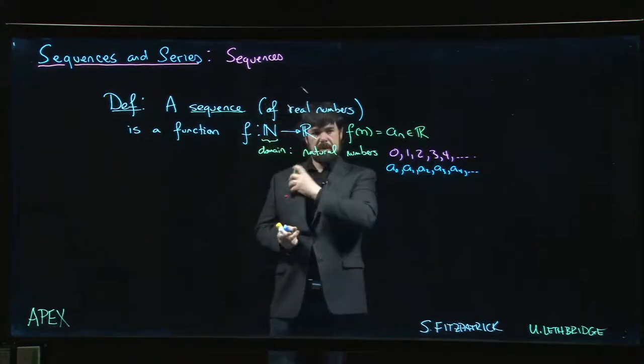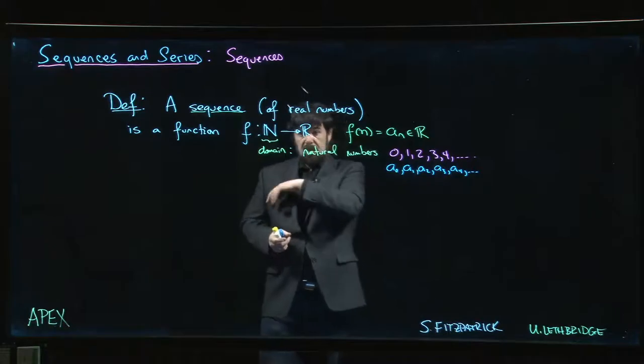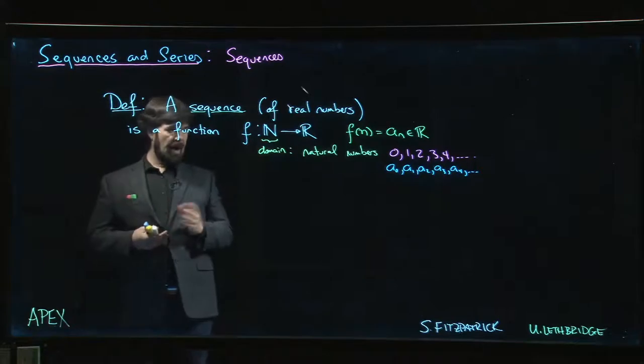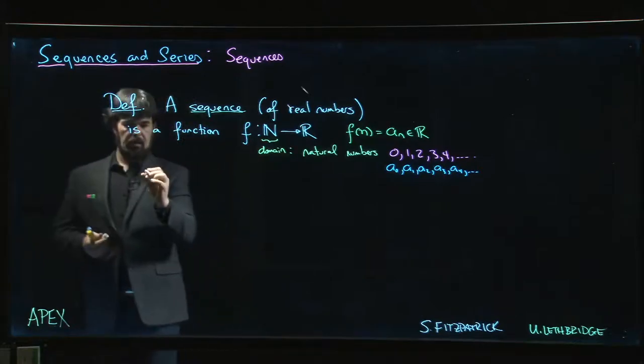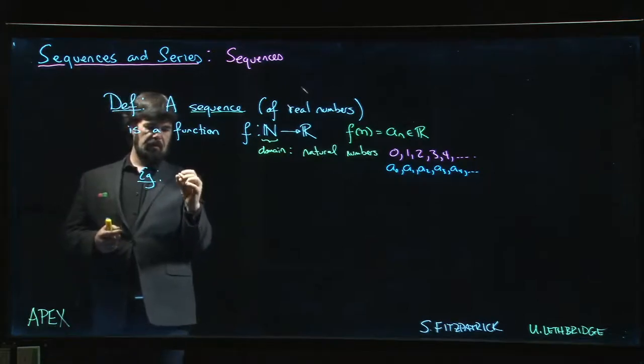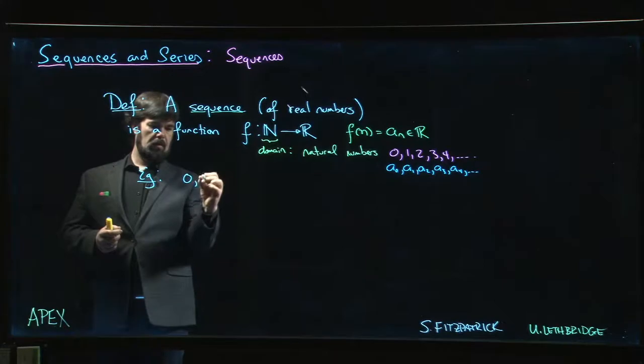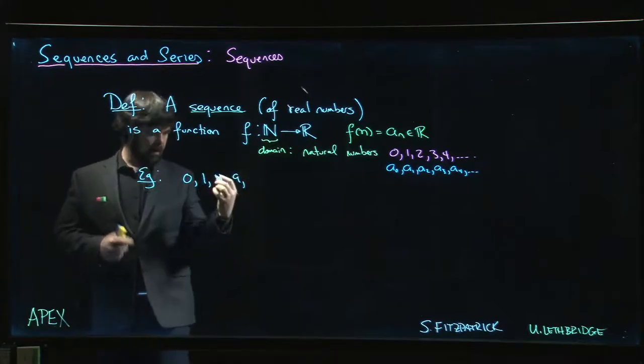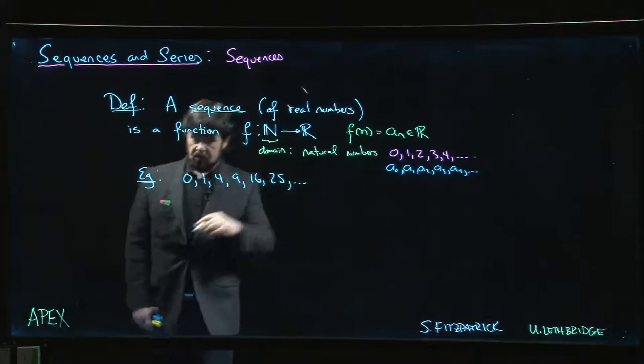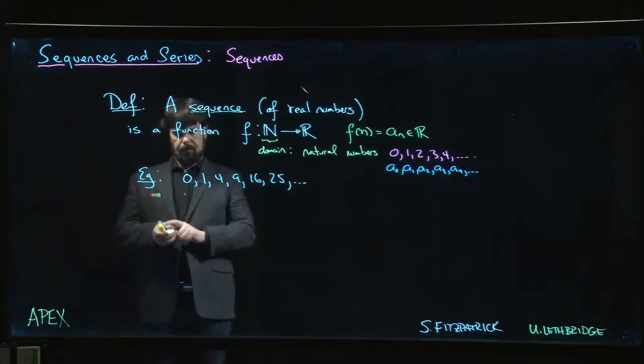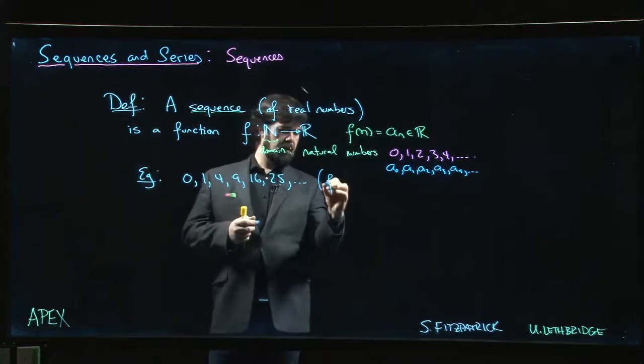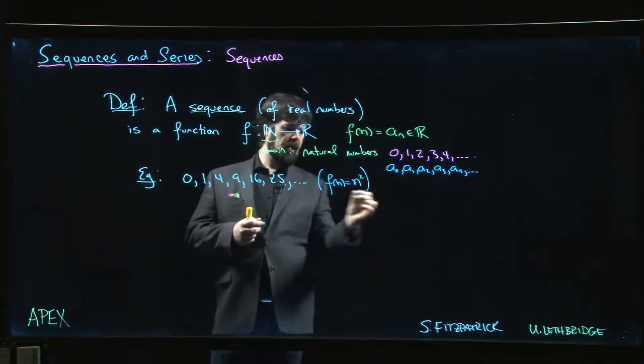Okay. So there's lots of things you can think of here. I mean, you can just write down any list of real numbers, and that's going to give you a sequence. Probably you want a sequence that follows some sort of pattern. So we might look for something like, we might have something like this, our sequence might be something like 0, 1, 4, 9, 16, 25, and so on. And maybe by now you've guessed the pattern. So in other words, we can say here that f of n is just n squared.